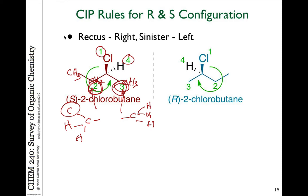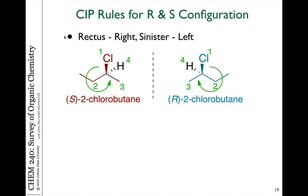If we go from number one to number two to number three, we're going in a counterclockwise direction. The lowest priority group — in this case hydrogen — is going away from us and pointing towards the back. That is the direction of view you have to take when determining R and S, with the lowest priority group going to the back.